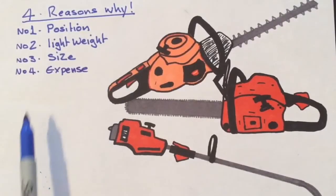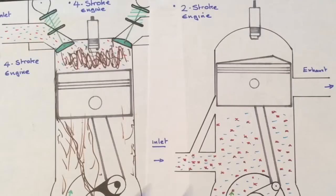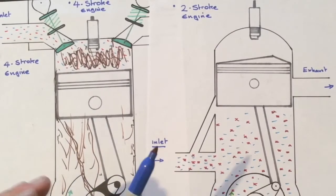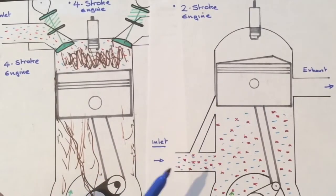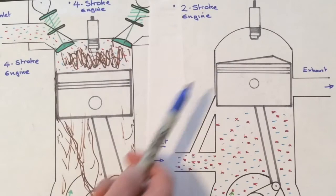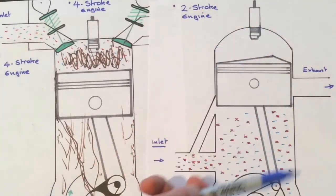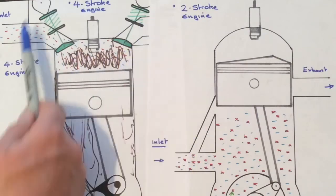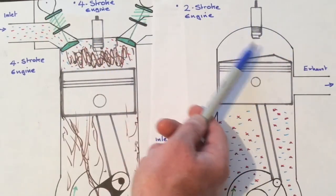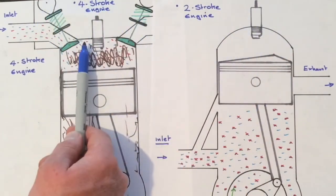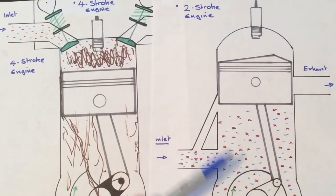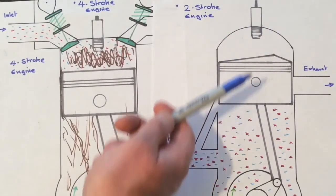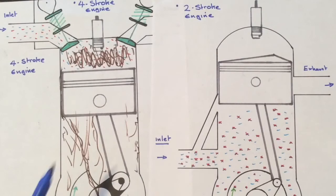And finally, number four, expense. Everything relates to price. We all want as much product as we can for our money. So expense is a big issue. And we can see here why, because obviously we've got more of a basic engine here, basic structure. It's going to cost less than all of this complicated stuff. We've got far less components there than we have on the four stroke. So it's going to end up a cheaper product. This is another major factor why we use these engines on our garden machinery.